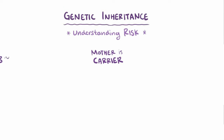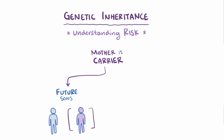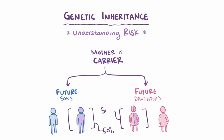Given the possibility of genetic inheritance, counseling is important. If the mother is a carrier, half — or 50% — of future sons will end up having the mutation, and half — or 50% — of future daughters will be carriers for the mutation.